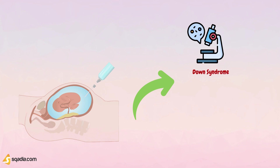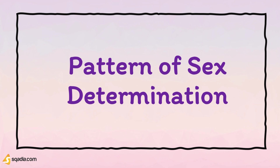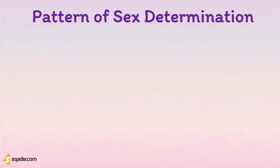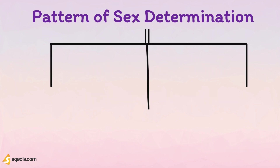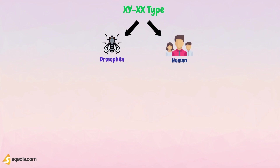Now let's discuss the patterns of sex determination. There is a wide variety of sex-determining mechanisms, but three patterns are more common. These are the XY/XX type, the X-nullo/XX type, and the WZ/ZZ type. The XY/XX pattern of sex determination is found in Drosophila, humans, and many other organisms.